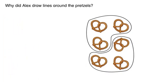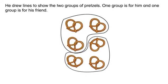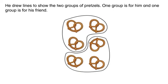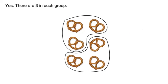Why did Alex draw lines around the pretzels? He drew lines to show the two groups of pretzels. One group is for him, and one group is for his friend. Is there the same number of pretzels in each group? Yes, there are three in each group.